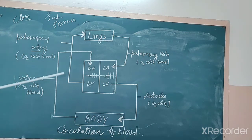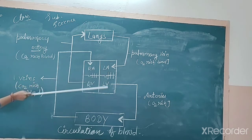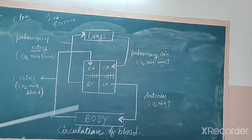First of all, the 4-chambered heart. Okay? Left ventricle, right ventricle. The left ventricle always has pure blood flow. Okay? And the right ventricle always has impure blood flow. Okay?